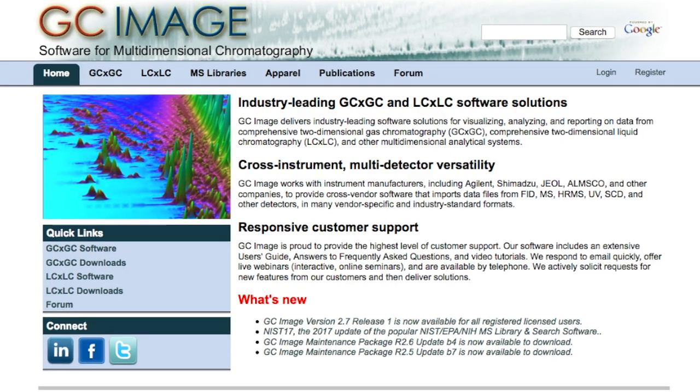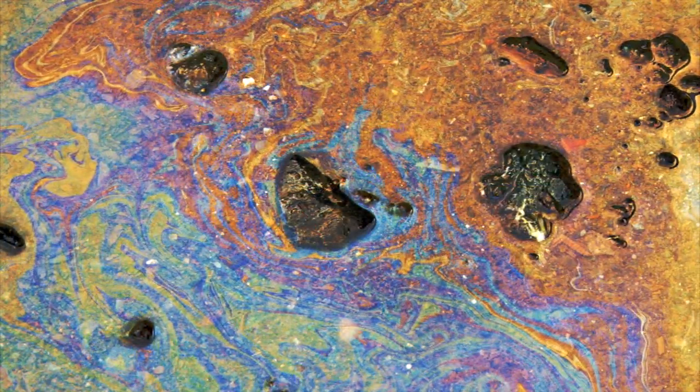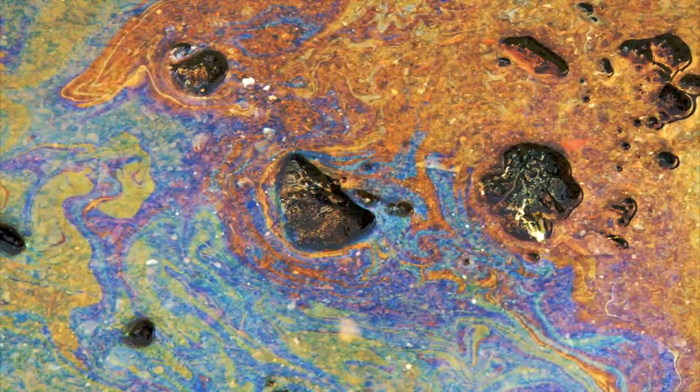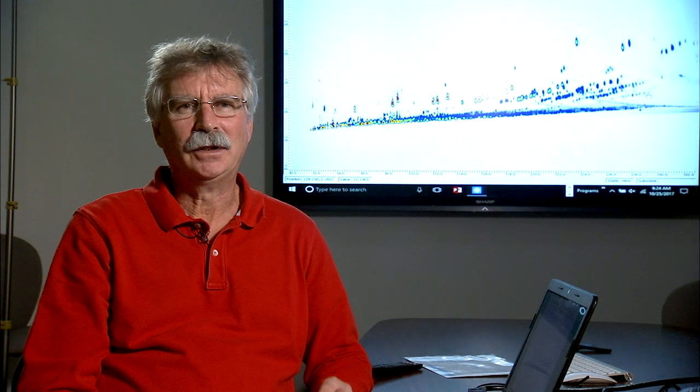Today, GC Image has clients all over the world. People that use the software work on very important problems, understanding the sources of pollution, for example, in oil spills or doing forensics in an arson case or finding the causes of cancer. To see our software being used to help solve or understand important societal problems is rewarding.